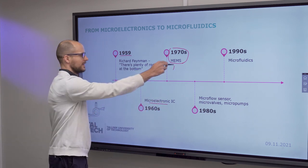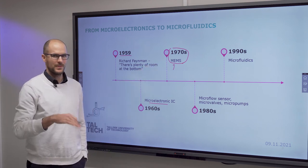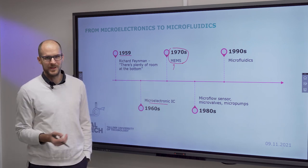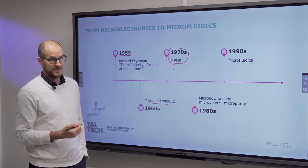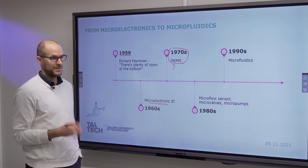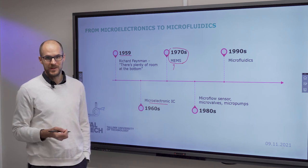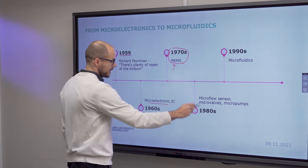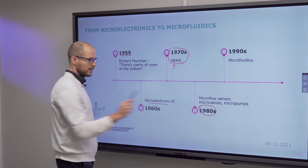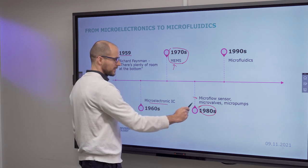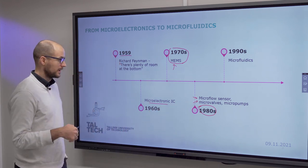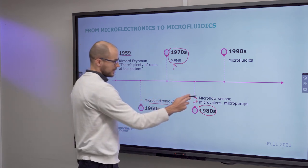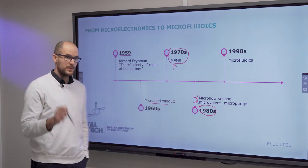These MEMS devices include actuators and sensors — by actuators and sensors I mean mechanical ones. For instance, an accelerometer is your typical everyday MEMS device that you have nowadays in your pocket. Then in the 80s there were already purpose-built microfluidic devices: microflow sensors, microvalves, and micropumps. These are possible to integrate onto a fluidic circuit.